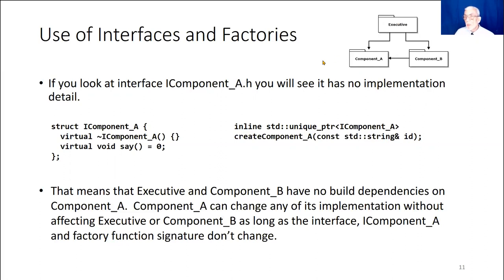One of the problems with large systems is that they tend to get creeping dependencies that make things hard to manage. By using these interfaces, we break those dependencies. The other parts depend on an invariant interface — they don't depend on the thing that's changing. So every time we change component A, we don't have to go and change these other parts because they depend on that invariant interface.